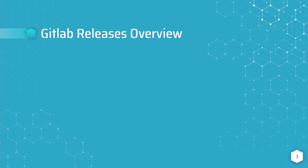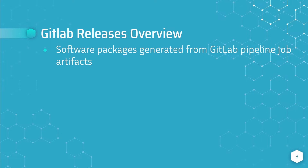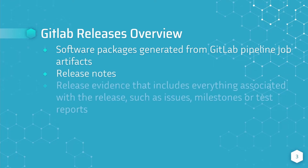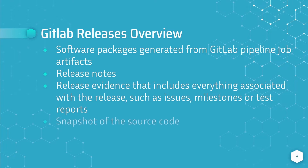A software release in a GitLab project may include the following: generic software packages generated from GitLab pipeline job artifacts, such as platform-specific binaries; release notes; release evidence that includes everything associated with the release, such as issues, milestones, or test reports; and by default, a snapshot of the GitLab project's source code.